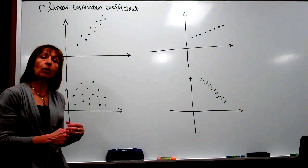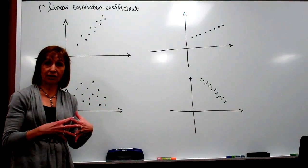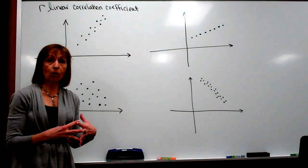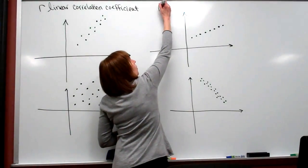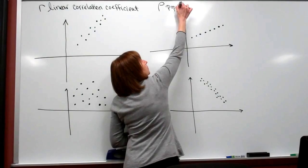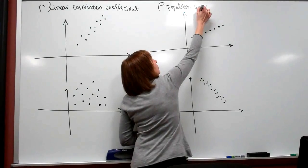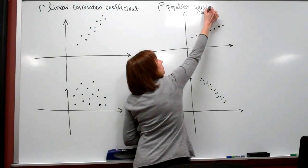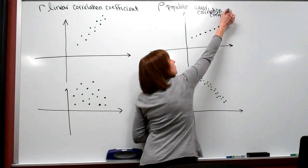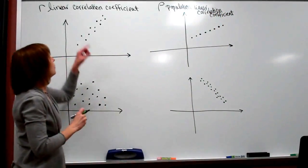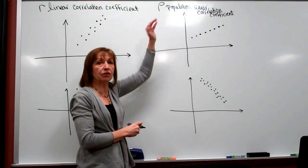When we're talking about what the population linear correlation would be — if we had the entire population — then that would be the Greek letter rho, which almost looks like a scripty P. So rho would be the population linear correlation coefficient. We use r if it's the sample statistic and rho if it's the population parameter.